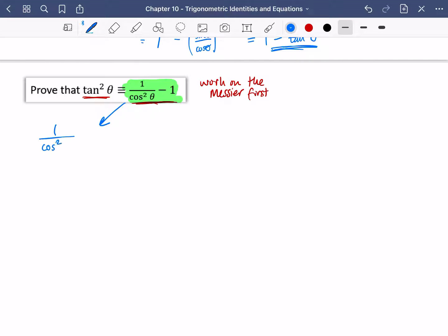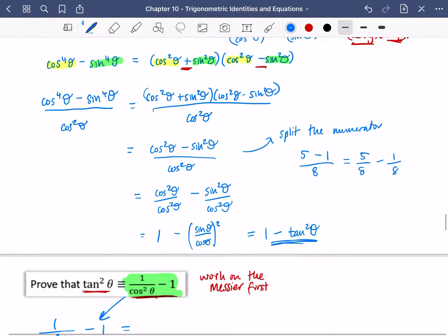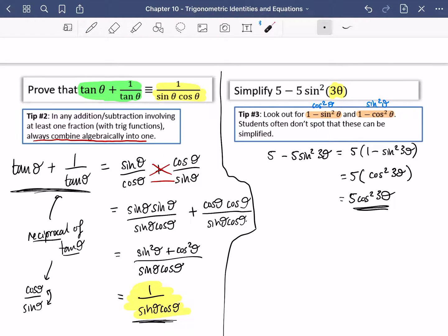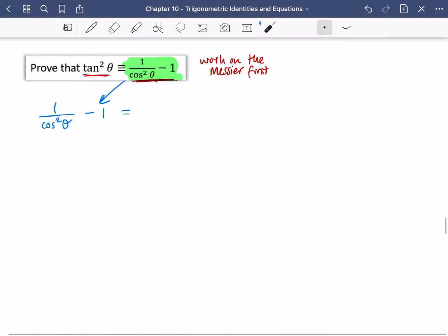So I have 1 over cos theta squared minus 1. Do you remember the tip that we had up here? The tip that said in any addition or subtraction involving at least one fraction, always combine them algebraically into 1. So this is why I've started with this green side, because I've got two things where one is an algebraic fraction and I combine it into one thing like this.